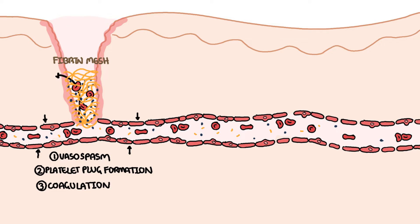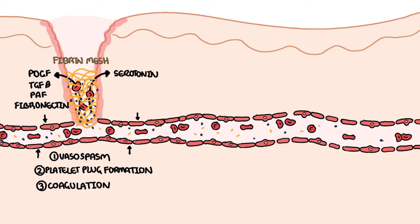Platelets release a number of substances which help initiate wound repair, such as platelet-derived growth factor, transforming growth factor beta, platelet activating factor, and fibronectin. Platelets also release serotonin, facilitating cell migration by increasing vascular permeability.